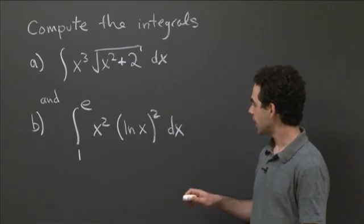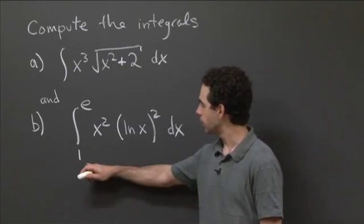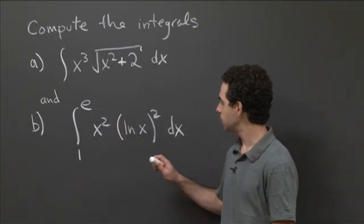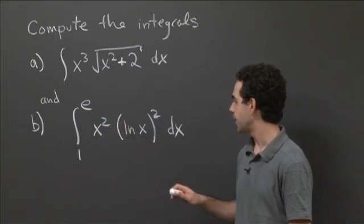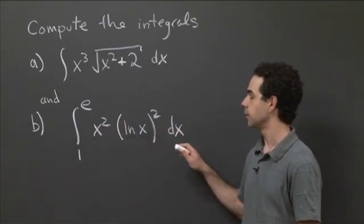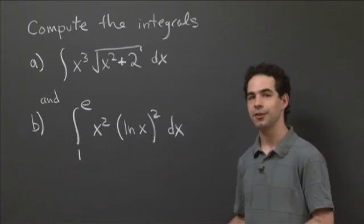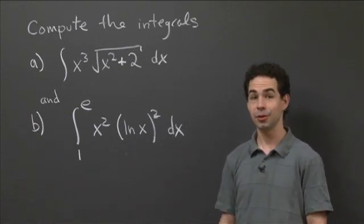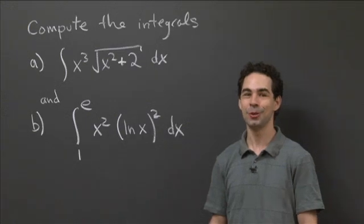And the second one is a definite integral — the integral from 1 to e of x squared times the quantity ln of x squared with respect to x. So why don't you pause the video, take some time to compute these two integrals, come back and we can compute them together.